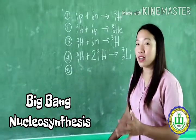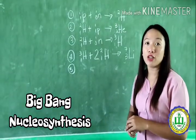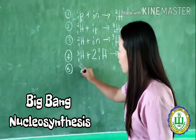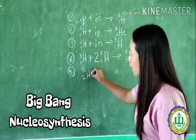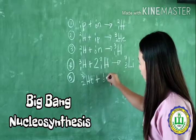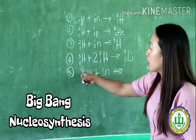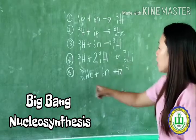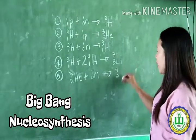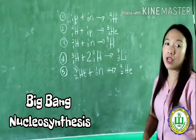For the last chemical reaction during Big Bang Nucleosynthesis: helium-3 collides with neutrons to form helium-4. Helium-3 + ¹₀n → 3+1=4 atomic mass, 2+0=2 atomic number — that's helium. So helium-4 is produced.